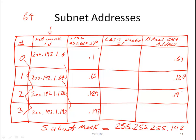We can easily calculate the last usable IP — it is the broadcast address minus 1. So the last usable addresses are .62, .126, .190, and .254. It is important to note that the subnets are numbered starting from 0: the first subnet is subnet 0, the second is subnet 1, the third is subnet 2, and the fourth is subnet 3.